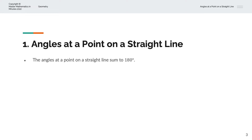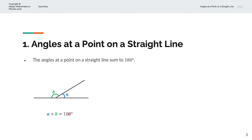The angles at a point on a straight line sum to 180 degrees. We will consider this visually. Looking at two lines, we have angles a and angle b. The sum of these two angles, a plus b, is equal to 180 degrees.